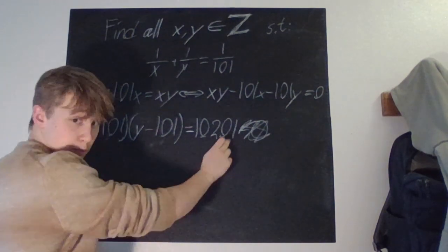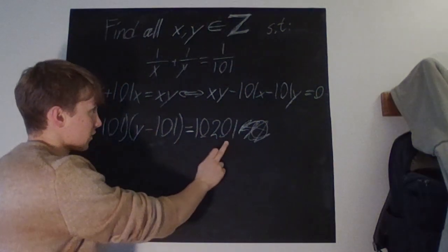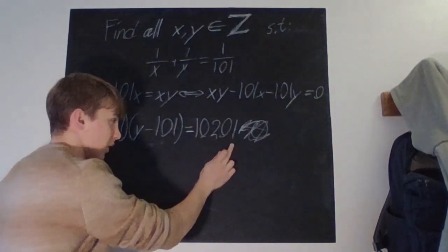So, therefore, we can just prime factorize 10201.